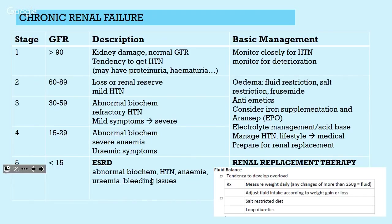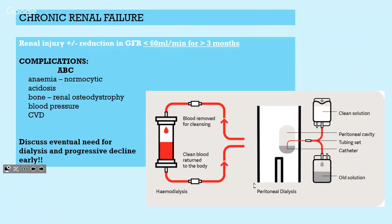Fluid balance management in CKD: measure weight daily, adjust fluid intake accordingly, salt-restricted diet, loop diuretics — similar to heart failure. Chronic renal failure complications are ABC: Anaemia (normocytic), Acidosis, Bone issues (renal osteodystrophy), Blood pressure and cardiovascular issues. Always discuss the eventual need for dialysis and progressive decline early.